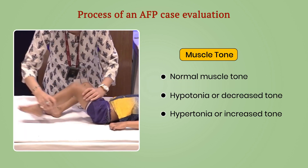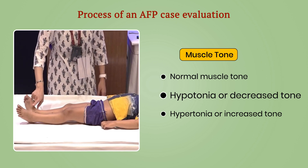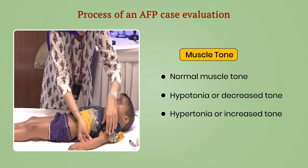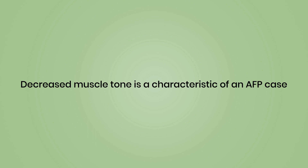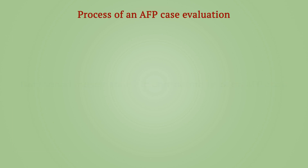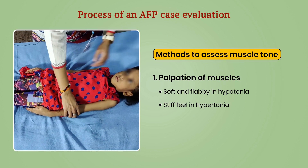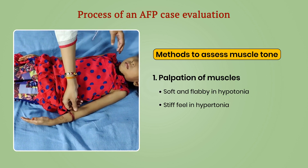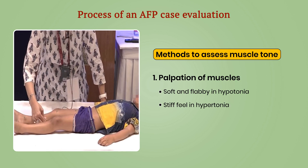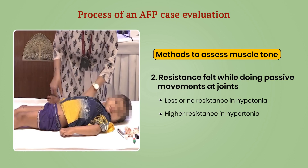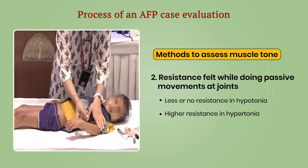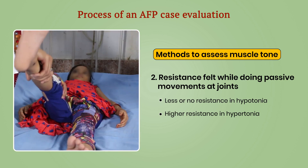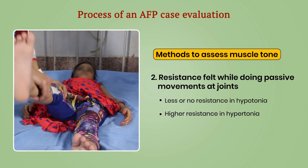Muscle tone can be graded into normal, hypotonia or decreased tone, and hypertonia or increased tone. Decreased muscle tone is characteristic of an AFP case. Methods to assess muscle tone are palpation of muscles — soft and flabby in hypotonia, while stiff in hypertonia — and resistance to and range of passive movements at major joints: less or no resistance in hypotonia, while higher resistance in hypertonia.